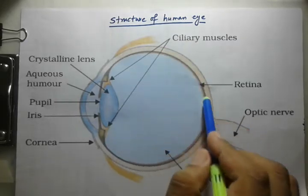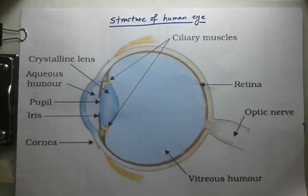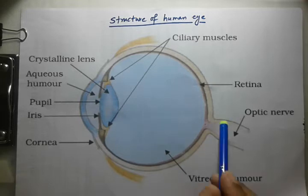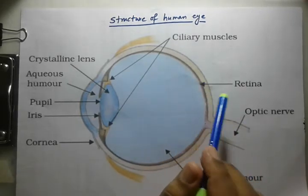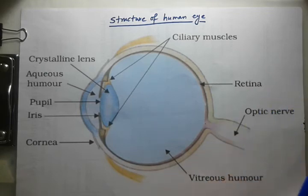Next is the retina. It is a delicate inner membrane on the back wall of the eyeball. It contains light-sensitive cells called rod cells and cone cells. Rods are sensitive to the intensity of light, while cones are sensitive to colors. These cells convert light energy into electrical signals, which are sent to the brain via the optic nerves.